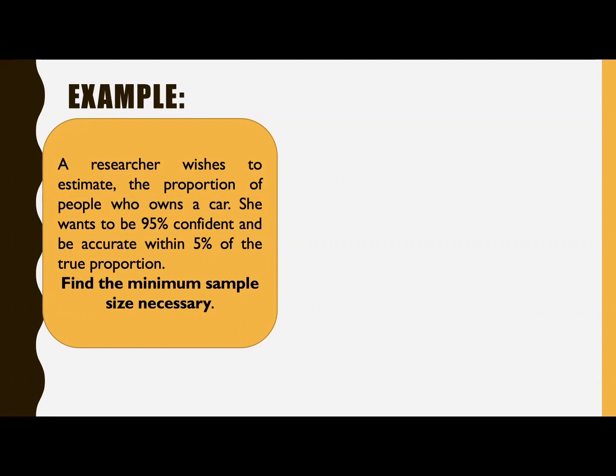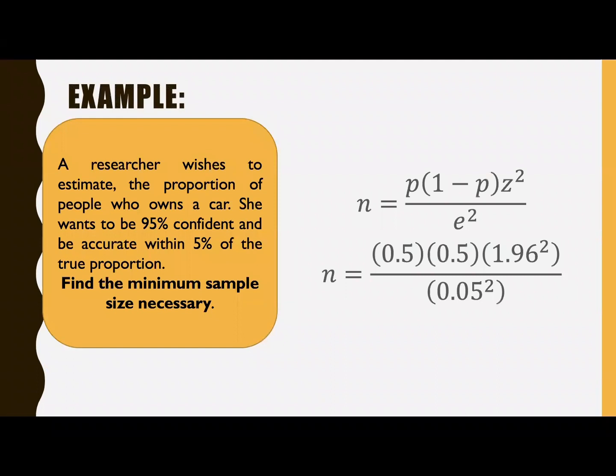So this time, since there is no prior knowledge of P, statisticians say it's very safe to assign a proportion of 0.50 or 50%. So in this case, your P is 50%. We have the formula: n equals P times 1 minus P times the standard score squared divided by the margin of error squared.